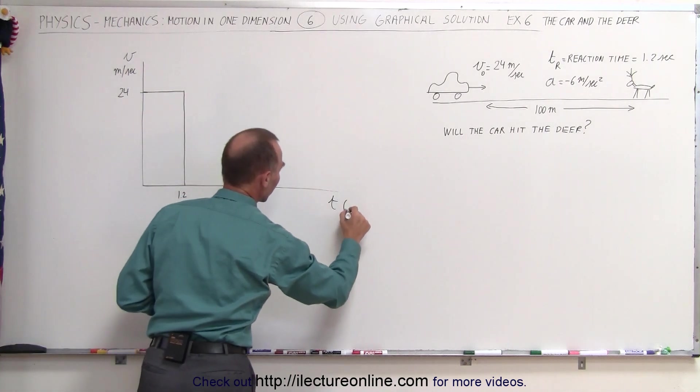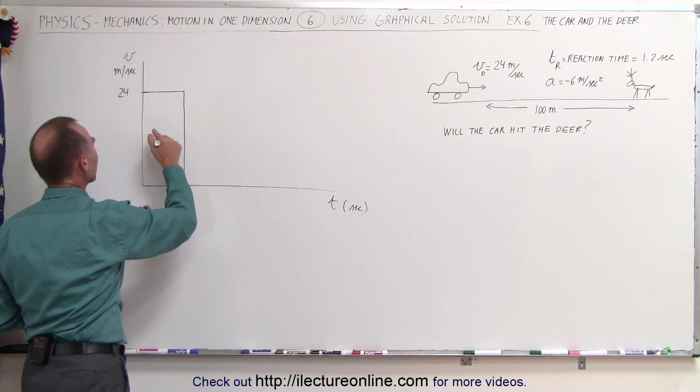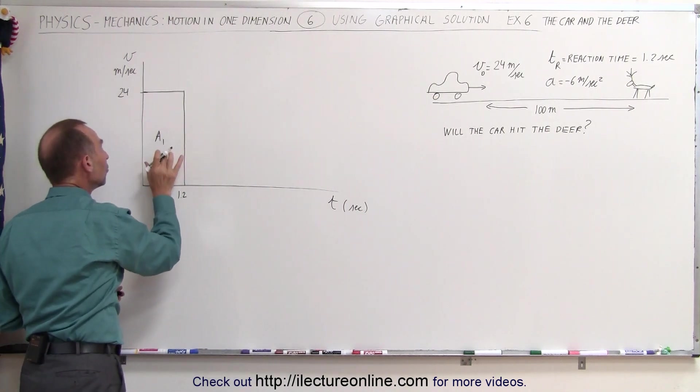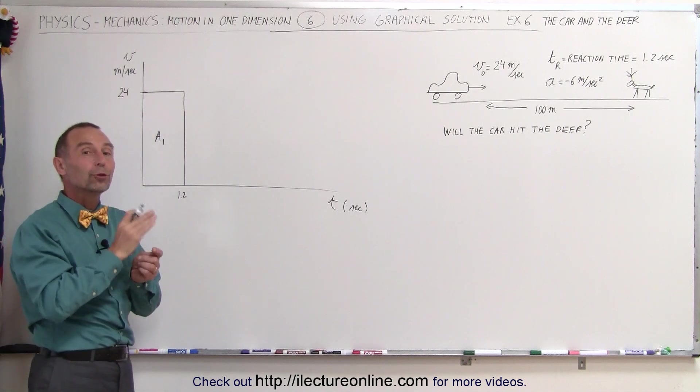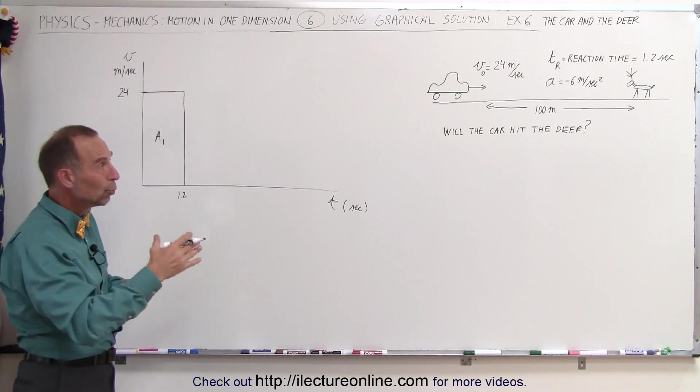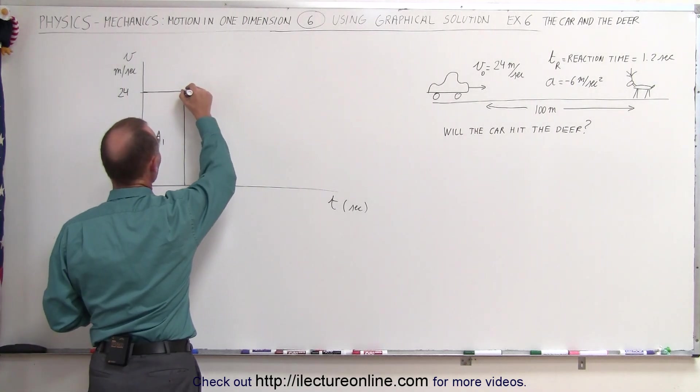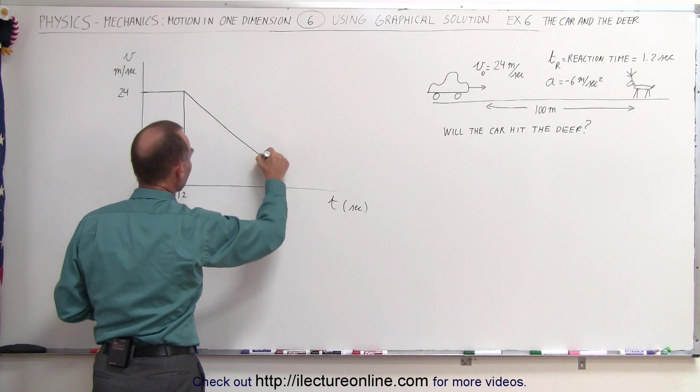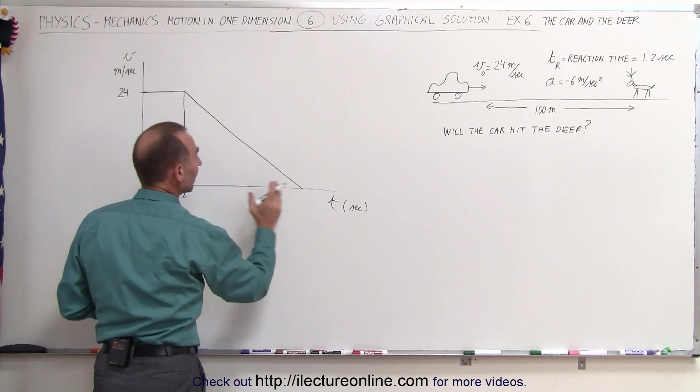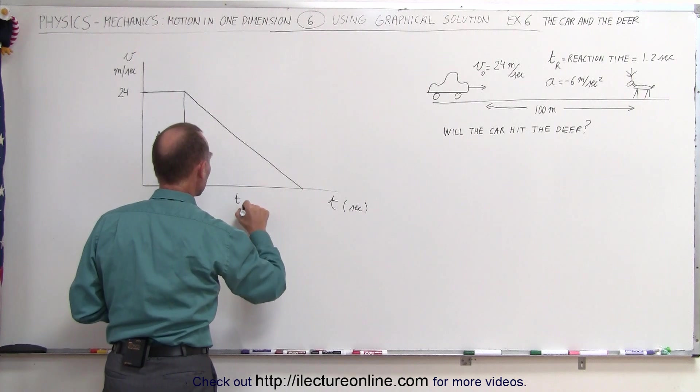This area, let's call it area 1, is the distance traveled by the car before applying the brakes. Then the car continues to move but decelerates at 6 meters per second squared, so we have a constant negative acceleration. We don't know what the time is, so let's call this interval t2.